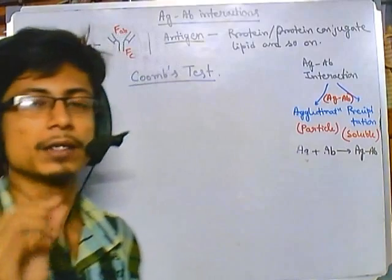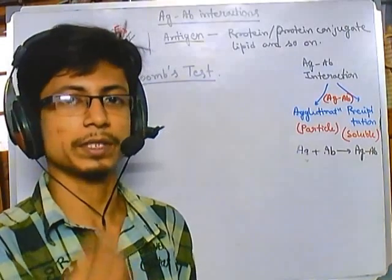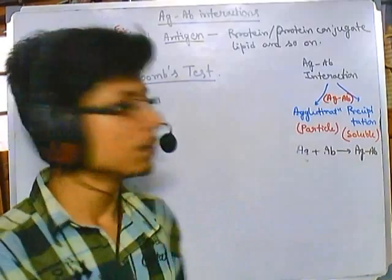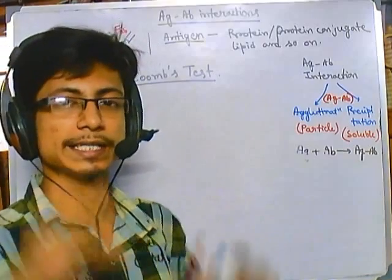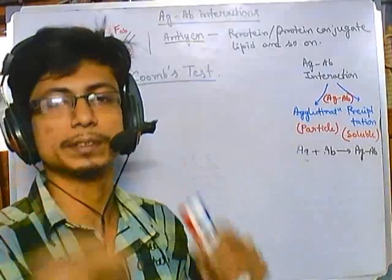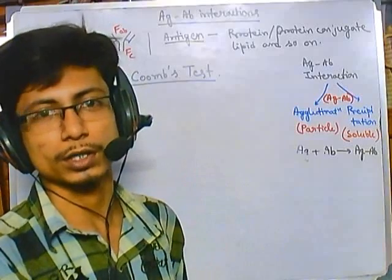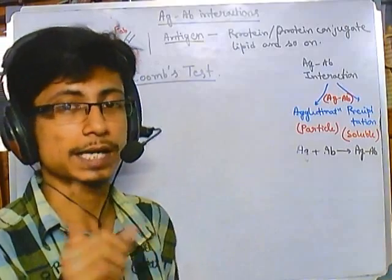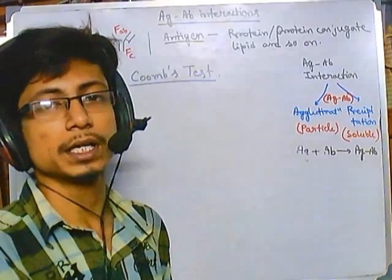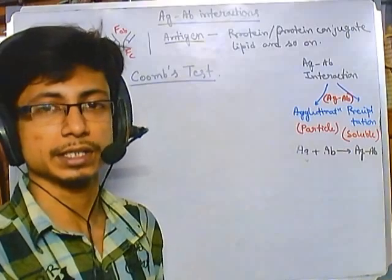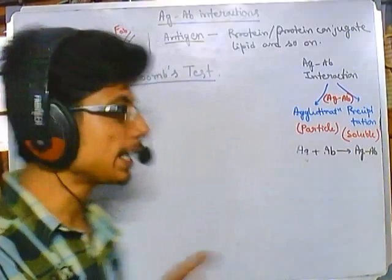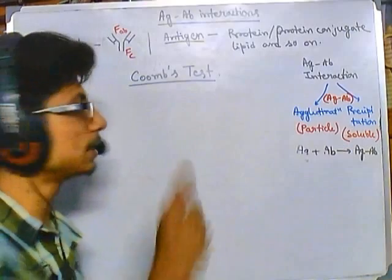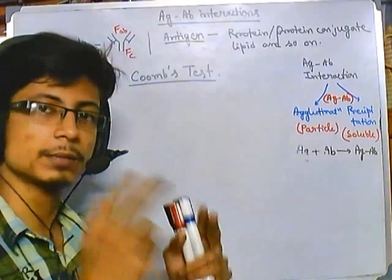In a standard agglutination or hemagglutination test, we want to find whether an antigen is interacting with an antibody. But in the Coombs test, what we want to find is whether there is any antigen-antibody complex already present inside a sample. That is the key difference. We still observe agglutination to get our result, but the process specifically detects pre-formed antigen-antibody complexes.